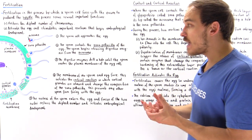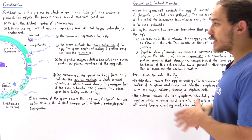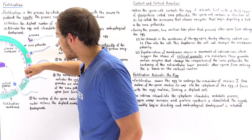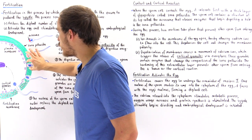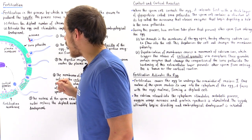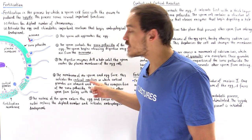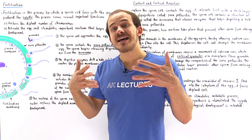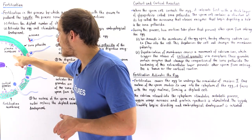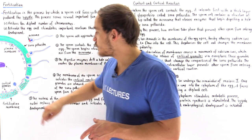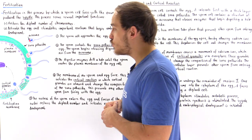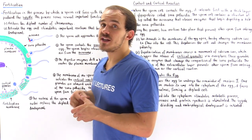It is the cortical reaction that prevents other sperm cells from entering the egg. Once a hole is drilled in the zona pellucida, the sperm cell makes its way to the membrane of the egg cell, and the membranes of the sperm and egg begin to fuse. Through this opening, the nucleus of the sperm cell enters the cytoplasm of the egg cell and eventually makes its way to the egg nucleus.